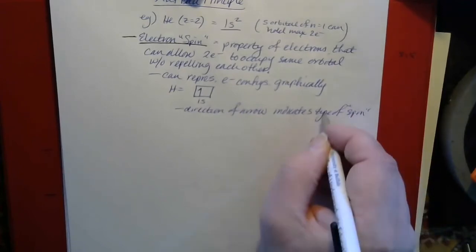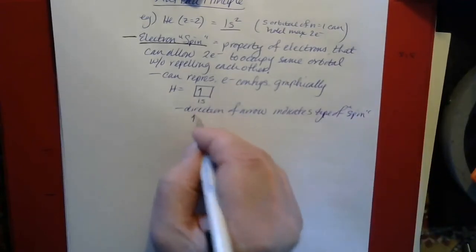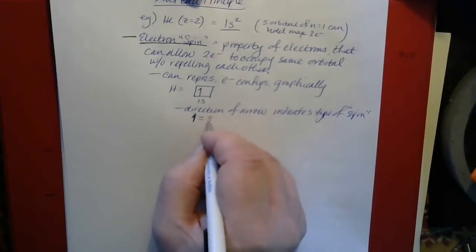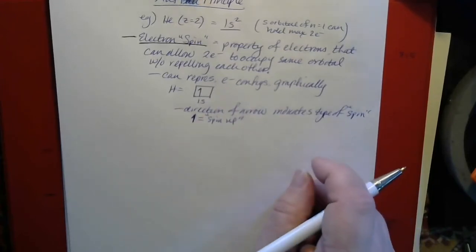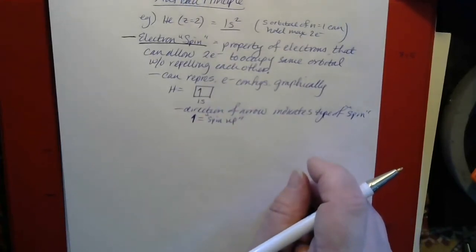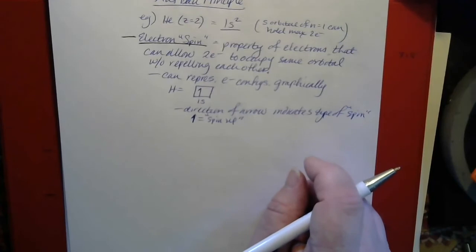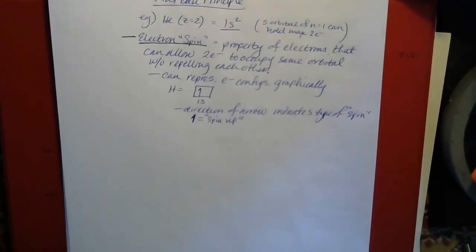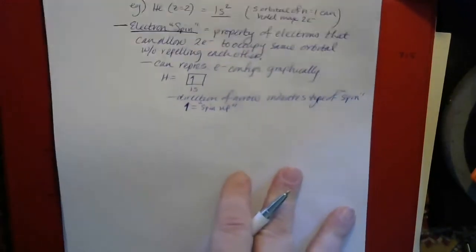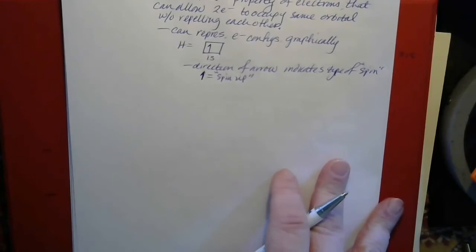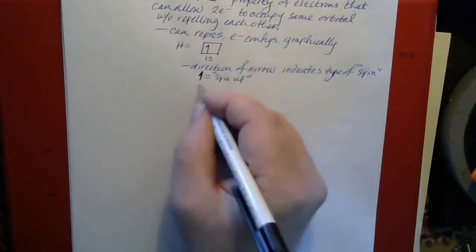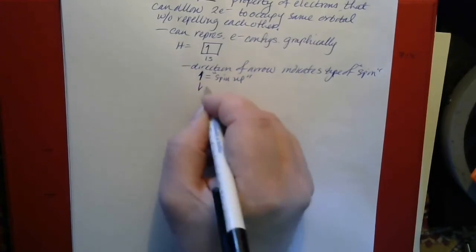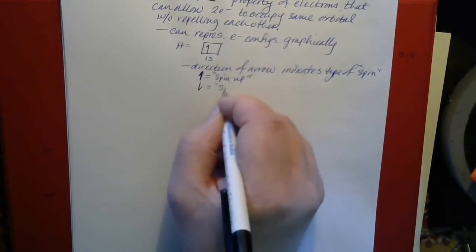There are two types of spin: spin up and spin down. Up and down don't really make a lot of sense literally, but it's just a name for a quality — they're not literally spinning up or down. An arrow pointed up is spin up, and an arrow pointed down is spin down.